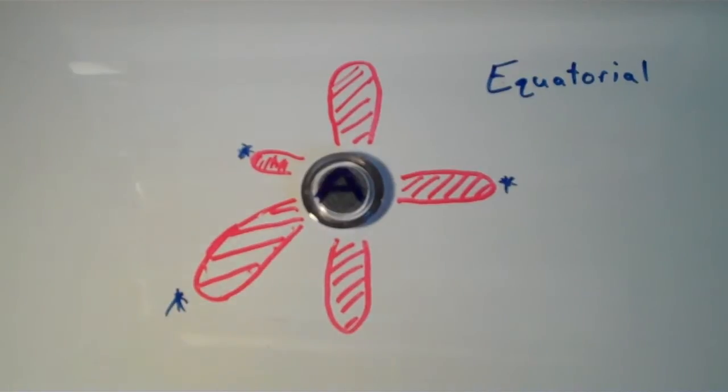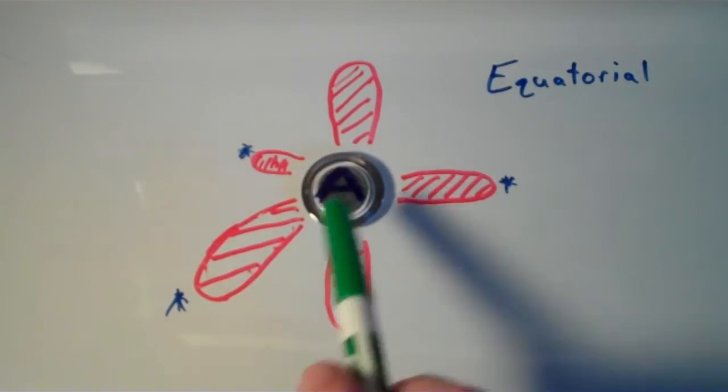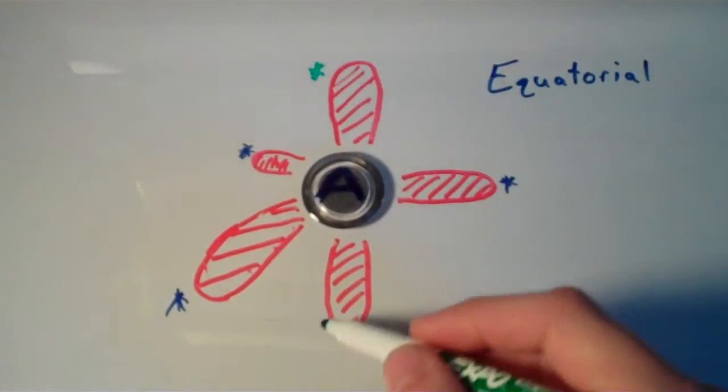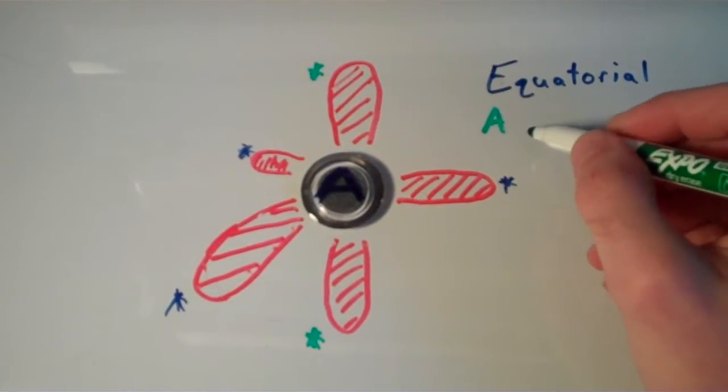The other two electron groups lie directly above and below the plane that is formed by the equatorial groups. And these are called axial groups or axial positions.